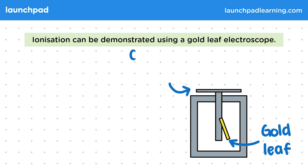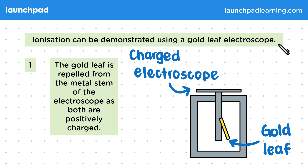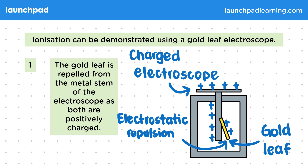The charging plate is used to charge the rod, so electrostatic forces can then be observed. The gold leaf is repelled from the metal stem of the electroscope, as both are positively charged. So we give both the electroscope and the leaf positive charge before the experiment, and the gold leaf is then repelled from the rod due to electrostatic repulsion, as they both have the same charge.